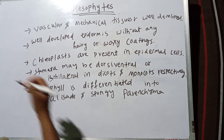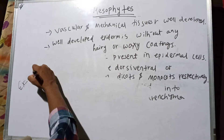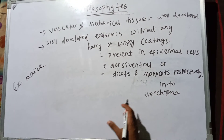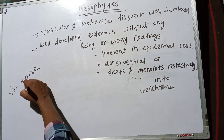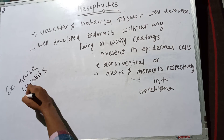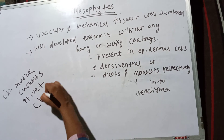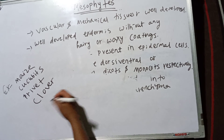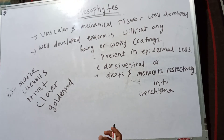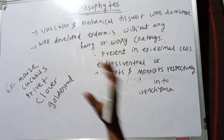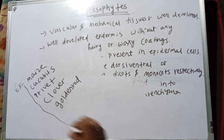Some examples of mesophytes: these plants prefer moist and well-drained soils, and most crops are mesophytes. Examples include cucurbita, privet, clover, and goldenrod. Basically, most crops belong to the mesophytes group. This covers the various features and examples of mesophytes.